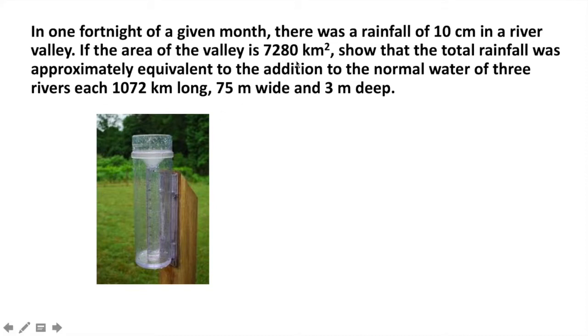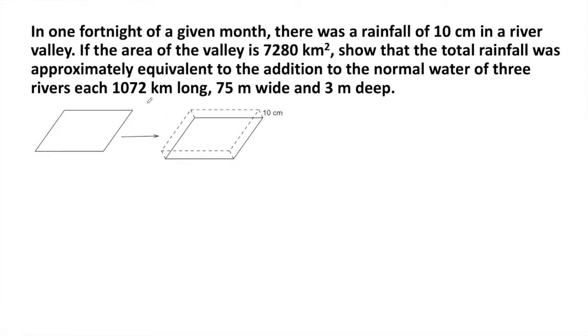The area of the valley is also given, so here we have to show that the volume of rainfall will be equal to the sum of the volume of water of three rivers. Each river has the same dimensions. Let us solve this problem. First, we are going to find out the volume of rainfall.